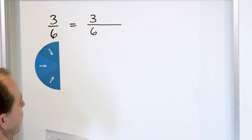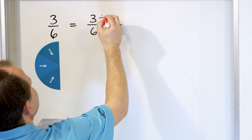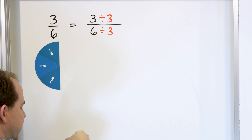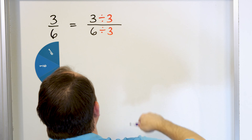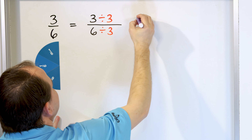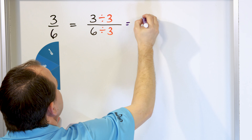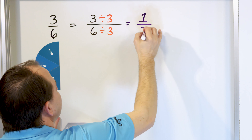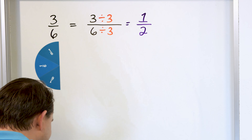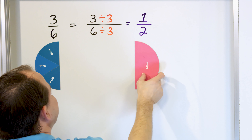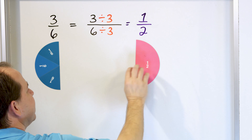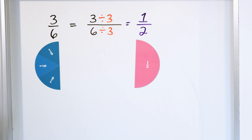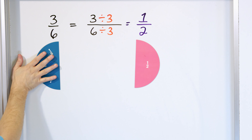What about the number three? What if we choose to divide the top of this fraction by three, and also the bottom by three? Well, three divided by three on the top is just one, and six divided by three on the bottom is just two. So what we have said is that the fraction one-half is exactly the same thing as the fraction three-sixths.